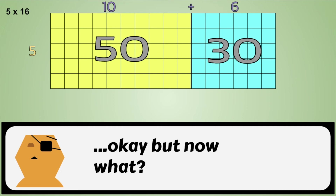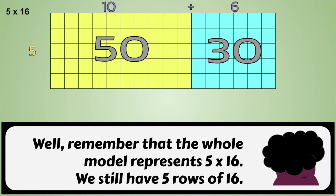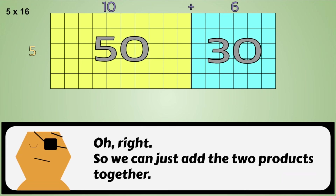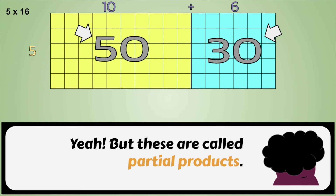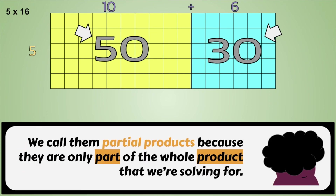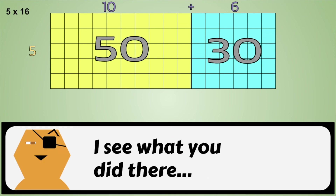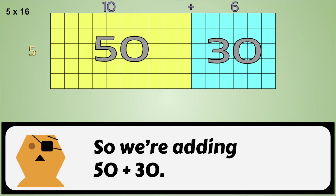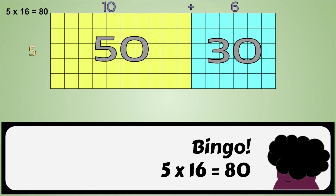Okay, but now what? Well, remember, the whole model represents five times sixteen. We still have five rows of sixteen. Now we just need to find the total number of squares. So we could just add the two products together. Yeah, but these are called partial products. We call them partial products because they're only part of the whole product that we're solving for. So we're adding fifty plus thirty? That's eighty. Bingo! Five times sixteen equals eighty.